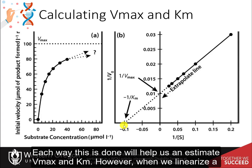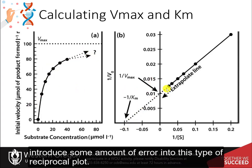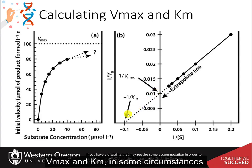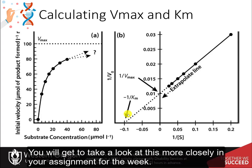However, there are many different ways that the data can be plotted to convert the hyperbolic graph into a linear one, and each way will help us estimate Vmax and Km. However, when we linearize a hyperbolic graph like this, we always introduce some amount of error into this type of reciprocal plot. Even a small change at a single point can dramatically change the values of Vmax and Km in some circumstances. You will get to take a closer look at this in your assignment for the week.